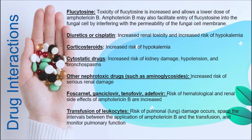Foscarnet, ganciclovir, tenofovir, and adefovir increase the risk of hematological and renal side effects of Amphotericin B. Transfusion of leukocytes carries a risk of pulmonary lung damage. Space the intervals between the application of Amphotericin B and transfusions, and monitor pulmonary function.